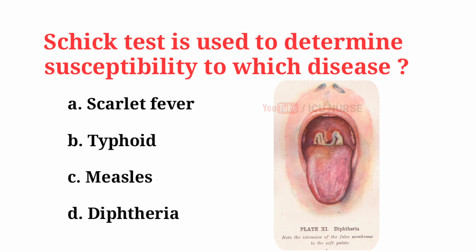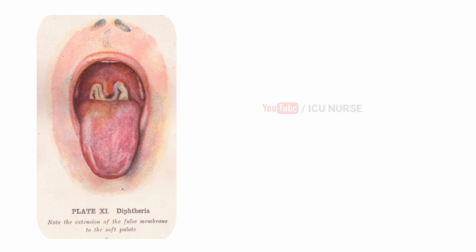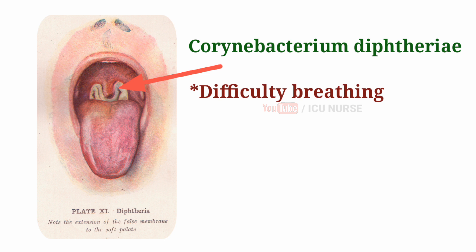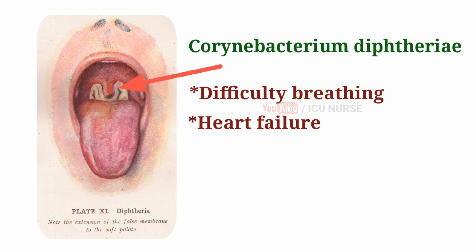Schick test is used to determine susceptibility to which disease? The correct answer is D, Diphtheria. Diphtheria is an infection caused by the bacterium Corynebacterium diphtheriae. It causes a thick covering in the back of the throat and can lead to difficulty breathing, heart failure, paralysis, and even death.